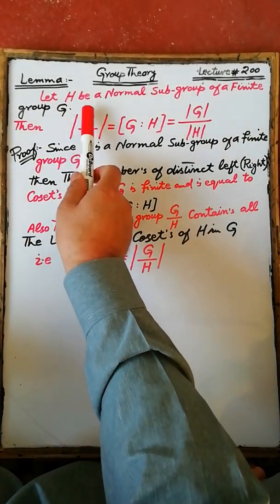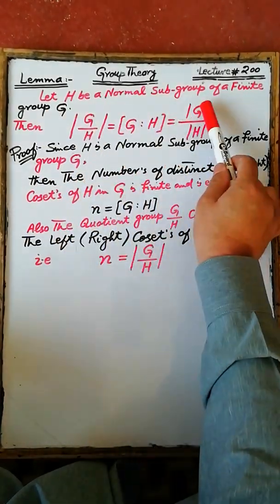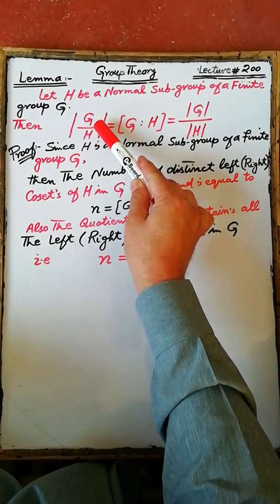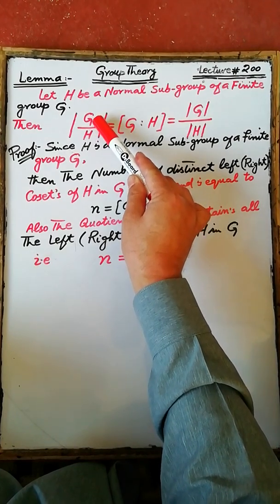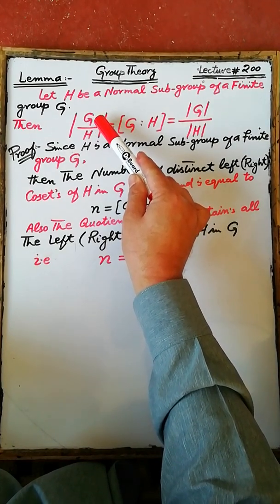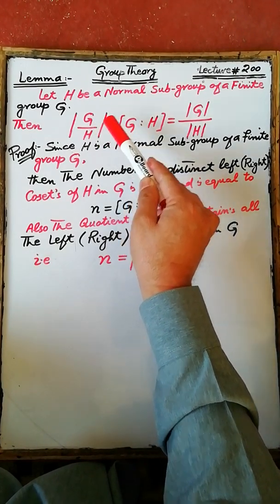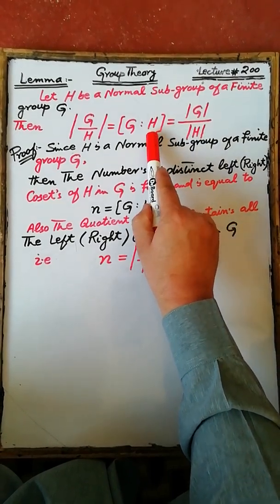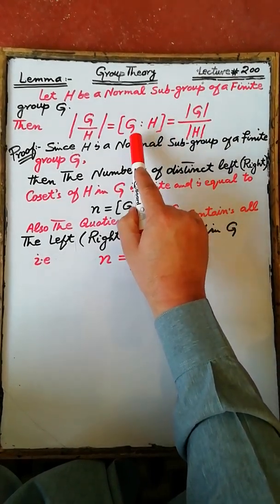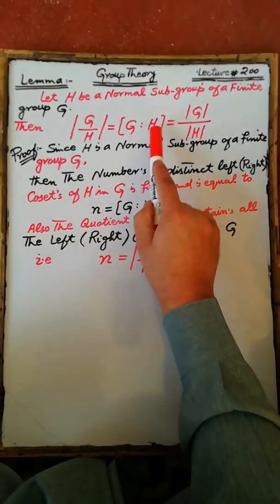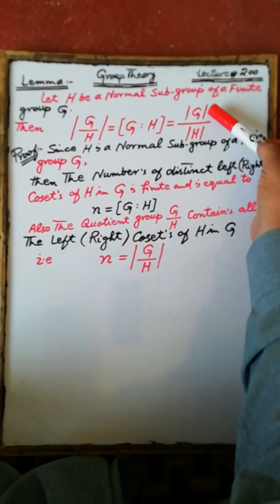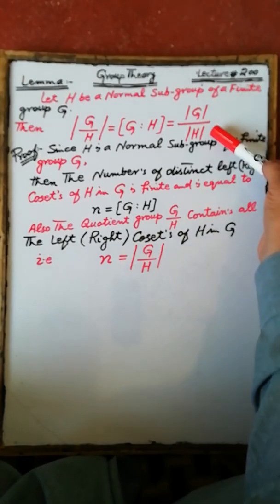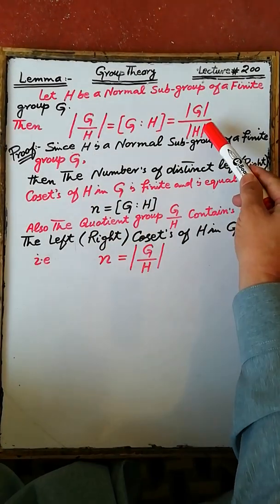Lemma: Let H be a normal subgroup of a finite group G. Then the order of the quotient group G/H is equal to the index of the subgroup H in G, which is also equal to the order of G divided by the order of H.